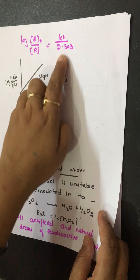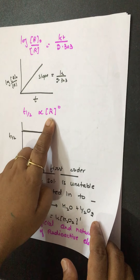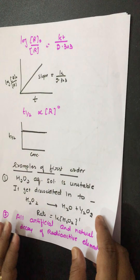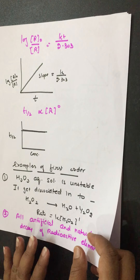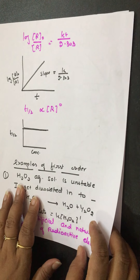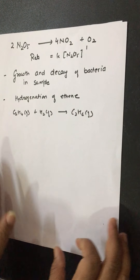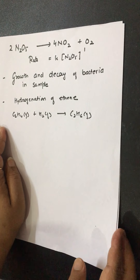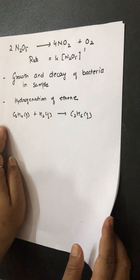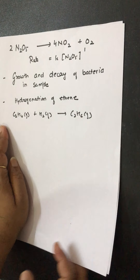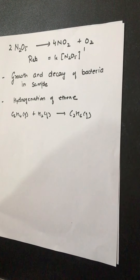Graphs for the integrated rate equations are straight lines; graph for log R₀/R vs. t has slope k/2.303; graph of T½ vs. initial concentration is horizontal since T½ is concentration-independent. Examples following first order kinetics include: decomposition of H₂O₂ in aqueous solution, artificial and natural radioactive decay, decomposition of N₂O₅, bacterial growth in samples, and hydrogenation reactions. In the next video we will study pseudo first order reactions. Goodbye.